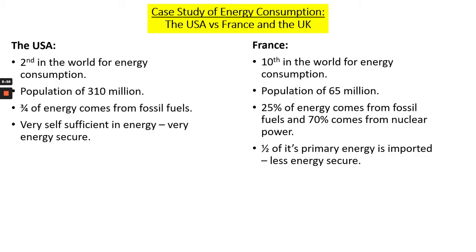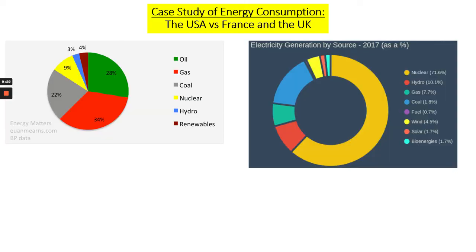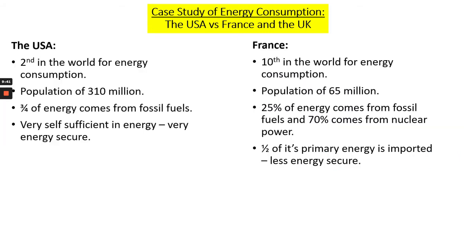The USA is second in the world for energy consumption, largely because of its population of 310 million people and its industry. Three quarters — nearly 80% — of the USA's energy comes from fossil fuels. The key thing about the USA is that it's very self-sufficient and energy secure, because it has a varying mix and can source oil, gas, and coal from its own landscape and surrounding oceans. It is not the best energy consumption mix for climate change or sustainability, but it is secure.